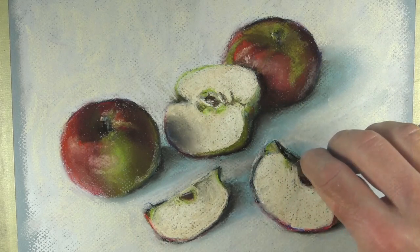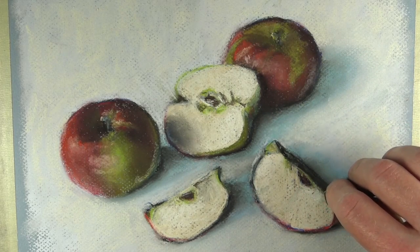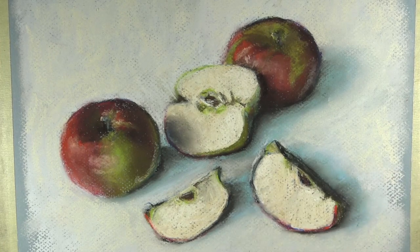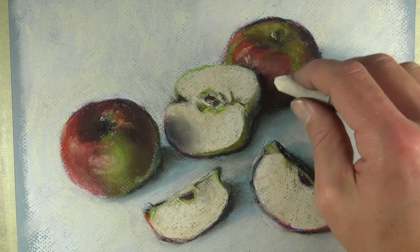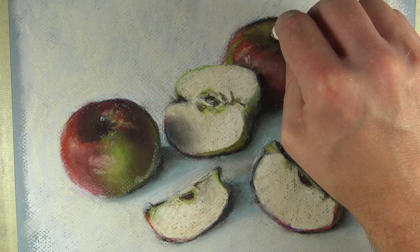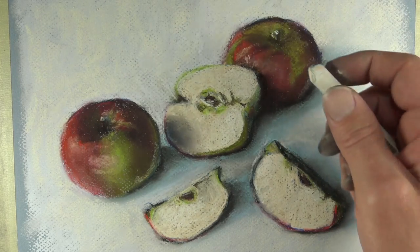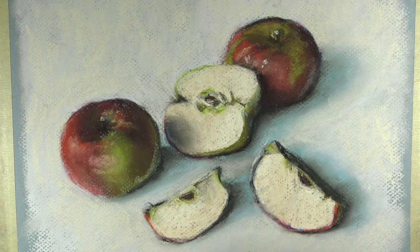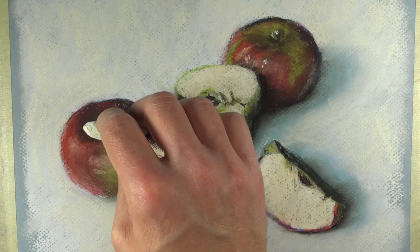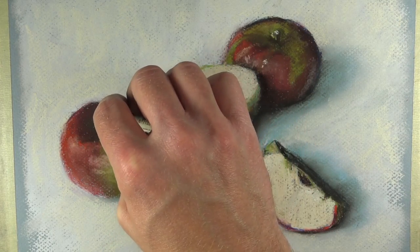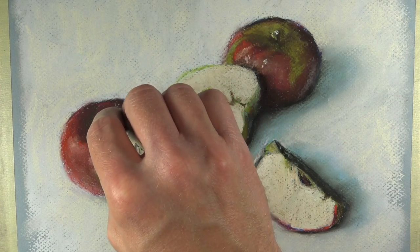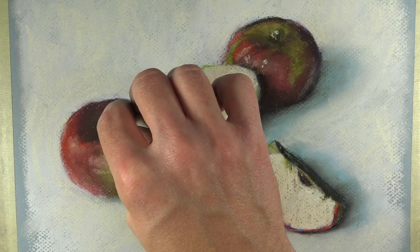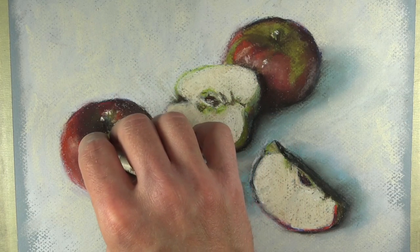Then we can darken up some of the details, or actually add some of the details on the inside portions of some of the apples. Here, a bit of burnt umber is used just to add a few indications of some seeds and maybe a bit of variation in the value. We'll also strengthen up some of the highlights. This time, we're actually using a white pastel to do so, and we're just touching a couple of areas with this white pastel to make a few indications of some strong highlights. Again, just pushing the range of value even further and increasing the contrast, and thus, the illusion of light.